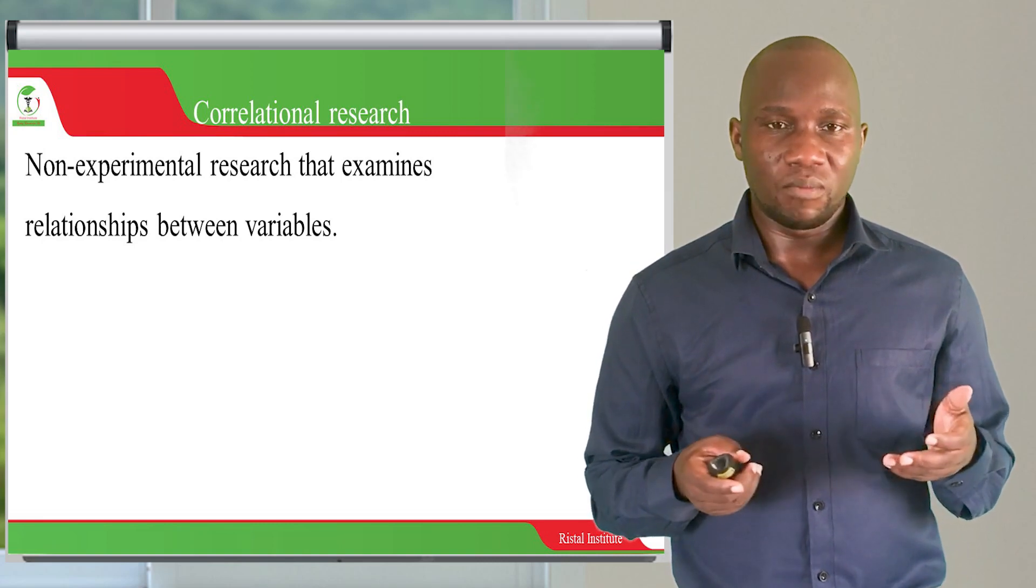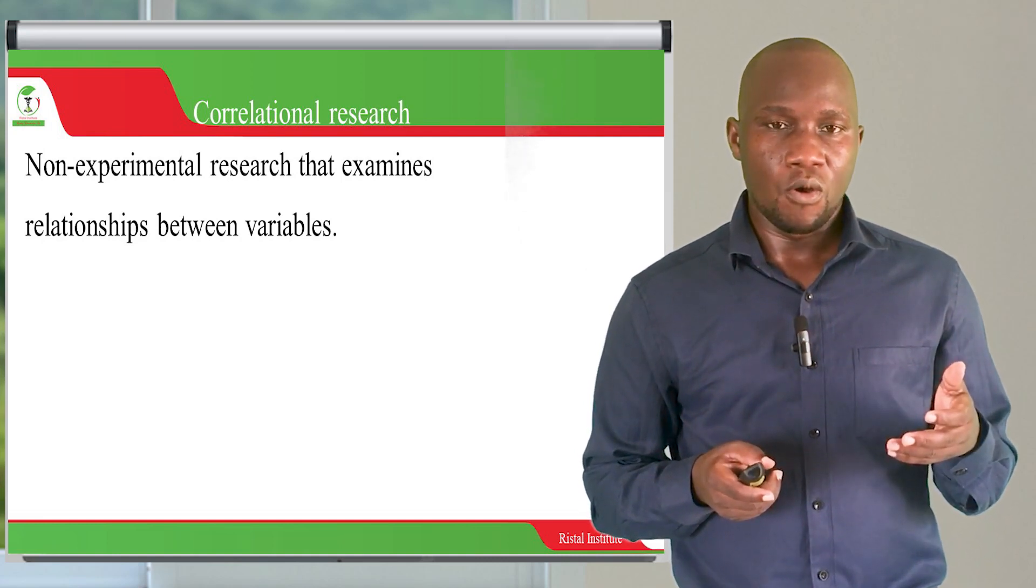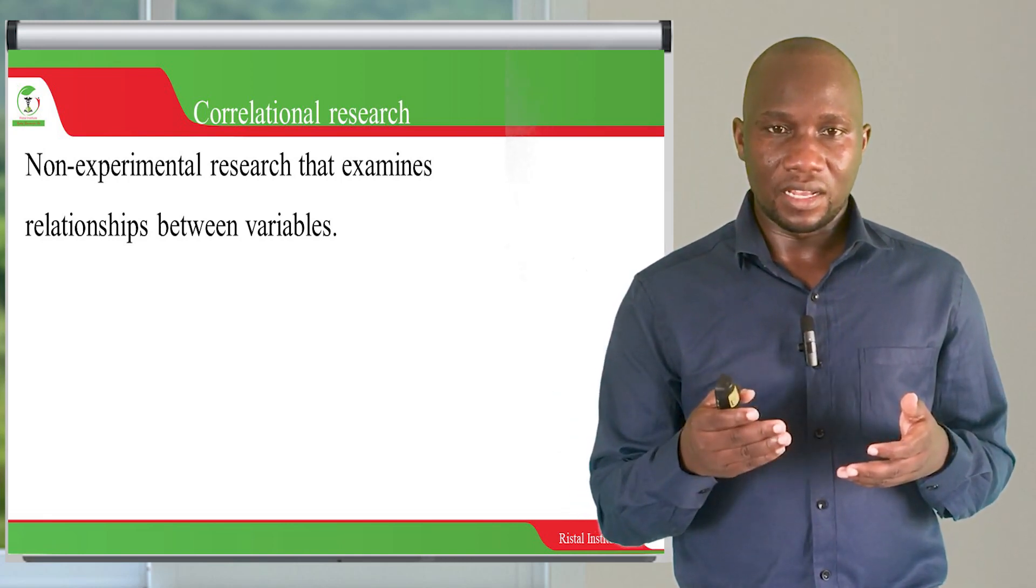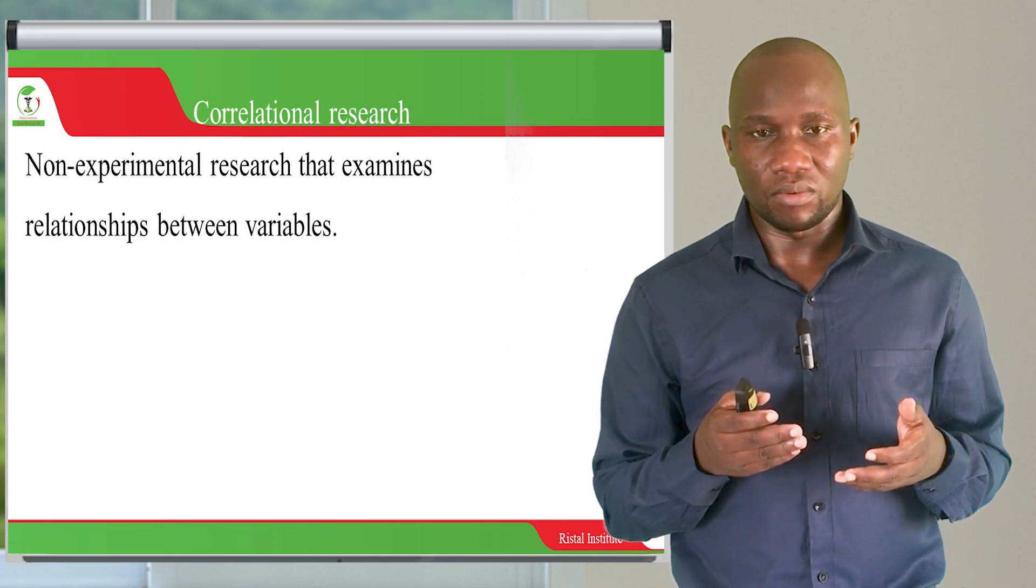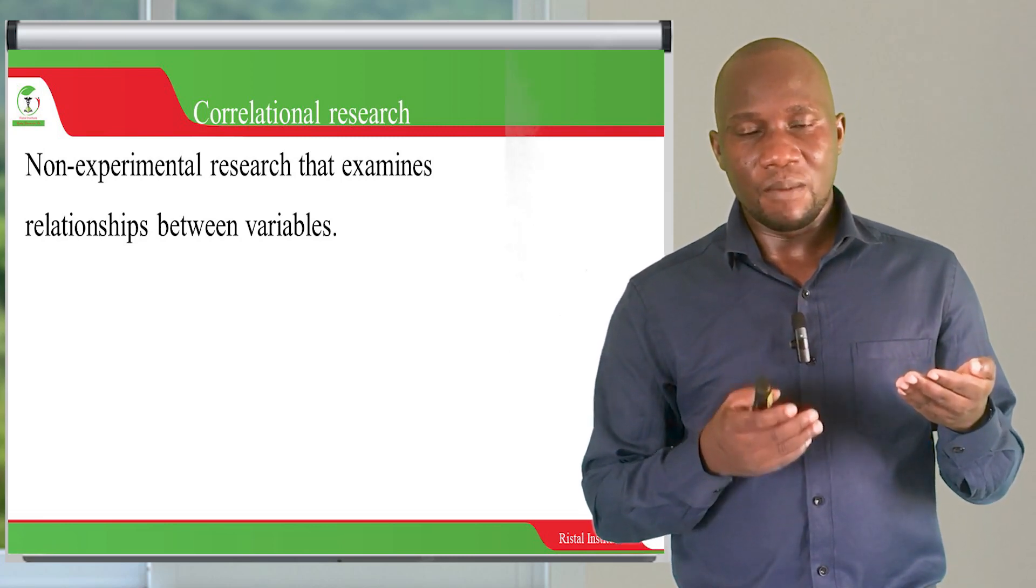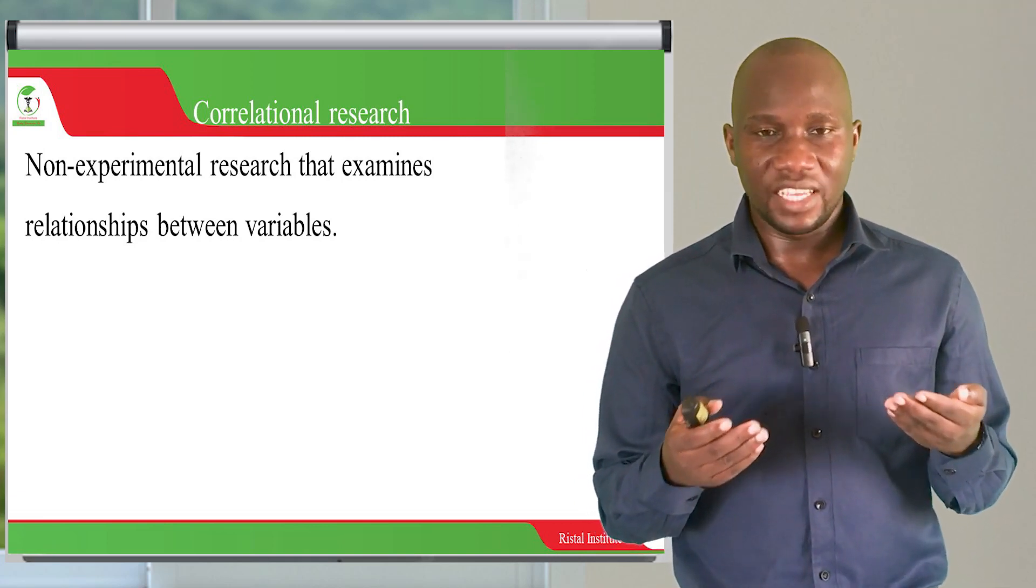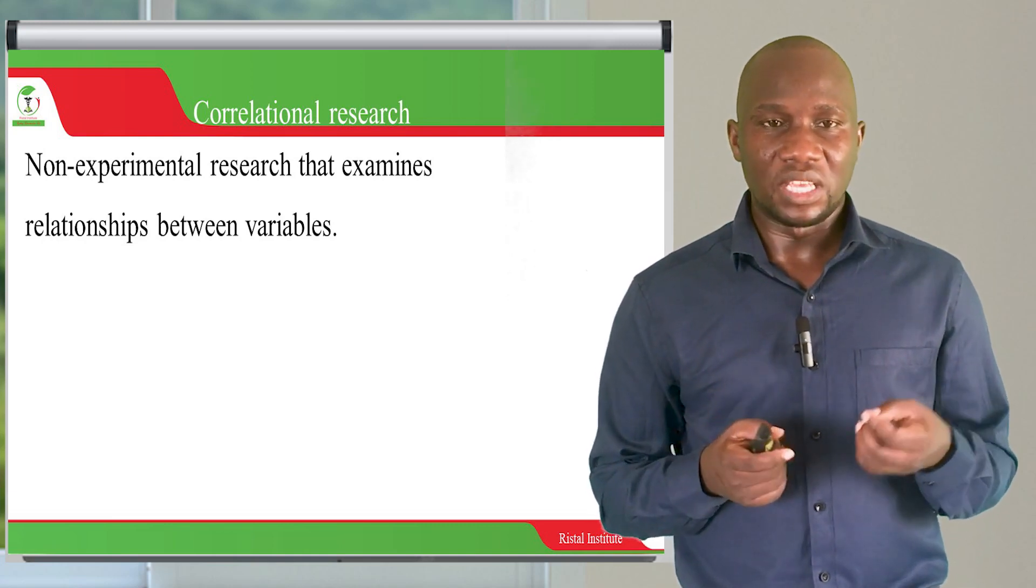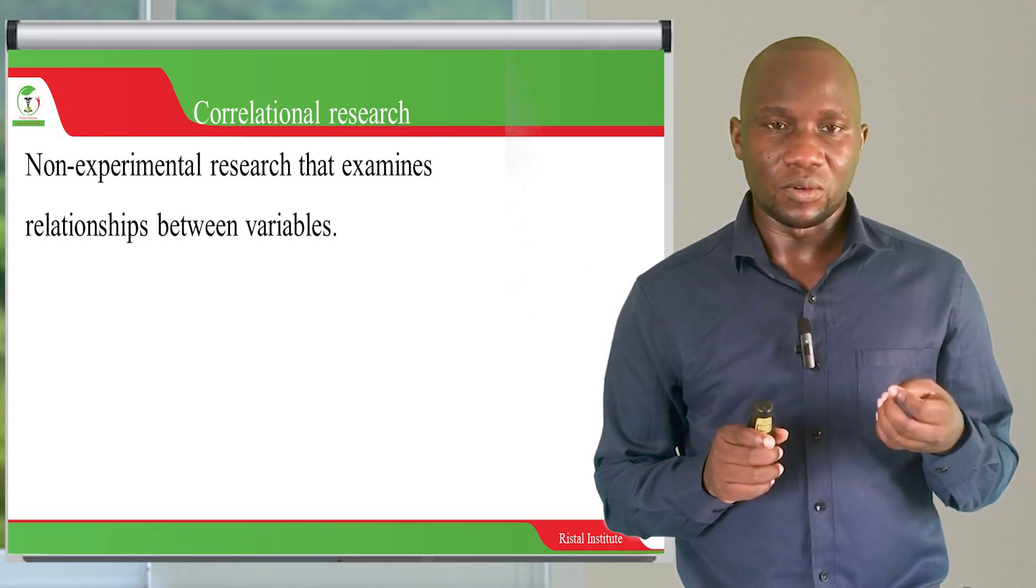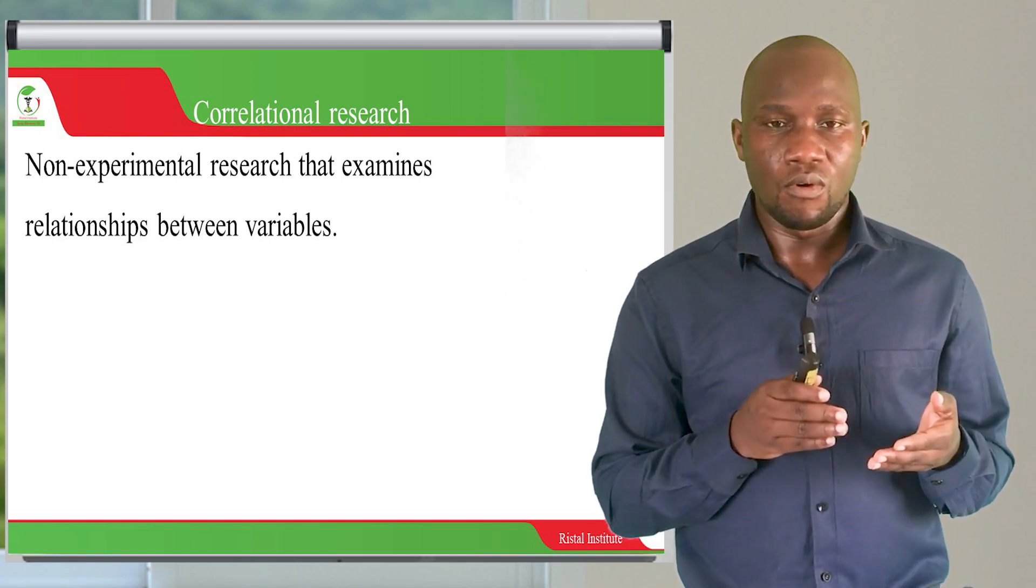For example, we may want to know the relationship between consumption of alcohol and the occurrence of liver cancer. Is there a relationship where people who consume more alcohol are more likely to get liver cancer? If you want to investigate such a question, we use a correlational study, and you're not going to manipulate the variables or the participants. You're not going to have an intervention on the participants.